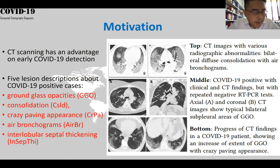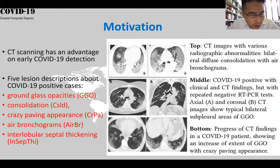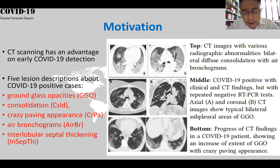We know that chest CT scans have a lot of advantage on early detection of COVID-19 and many other diseases. Particularly for COVID-19, there are five lesions — for example, ground glass opacity, GGO consolidation, crazy paving appearance, and some other lesions. And here are several photos representing those lesions.